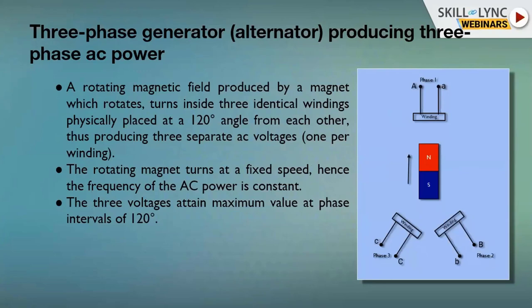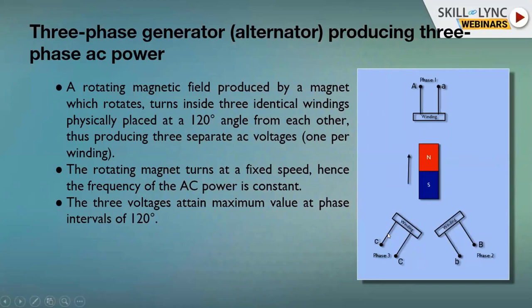Three-phase AC power is generated based on the fundamental principle of electromagnetic induction: we need a coil, a magnetic field, and relative motion between the two. In three-phase AC generation, three windings — A, B, and C phases — are spatially distributed at 120 degrees with respect to each other. No EMF is induced in the windings unless the flux changes.